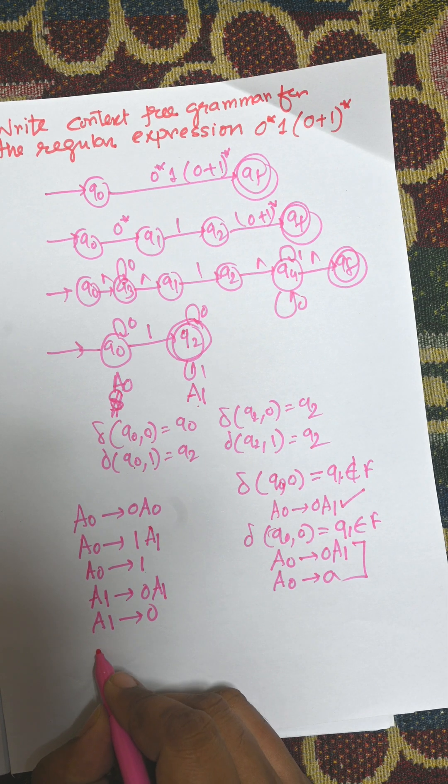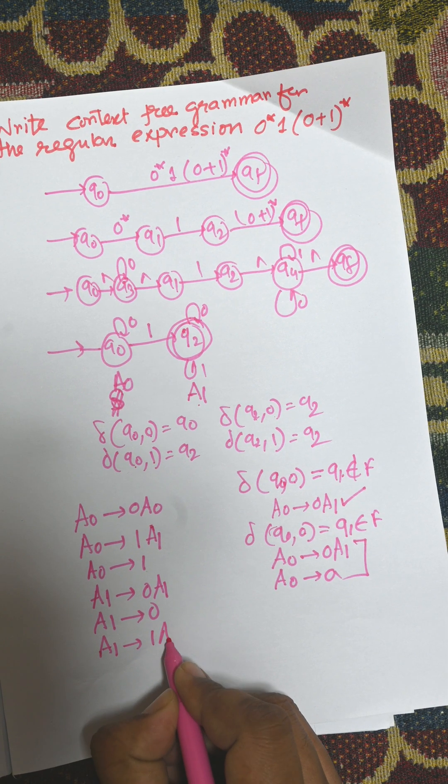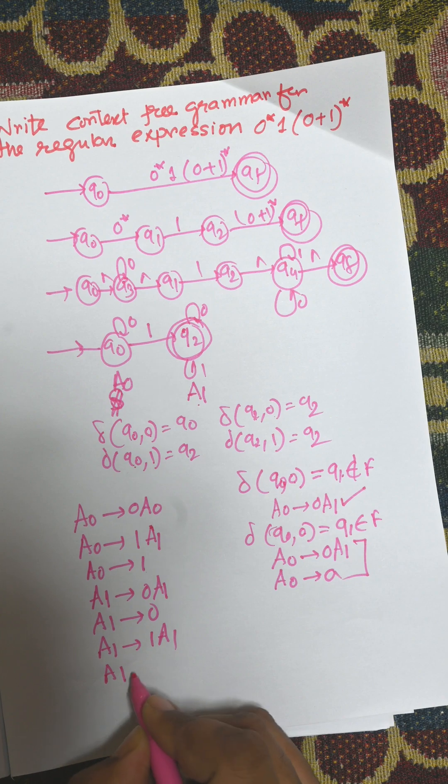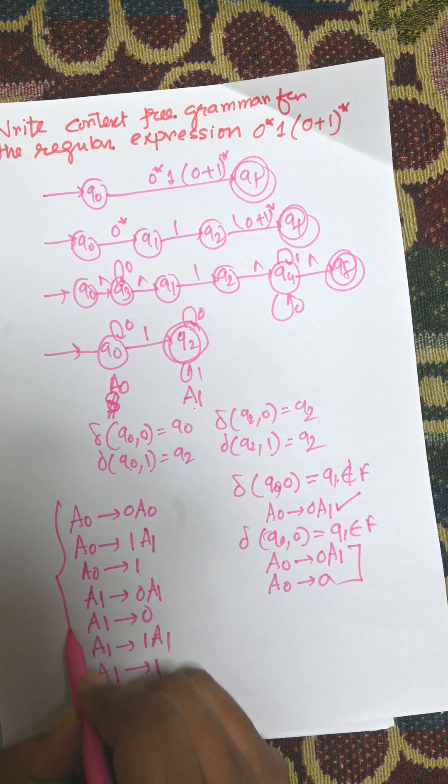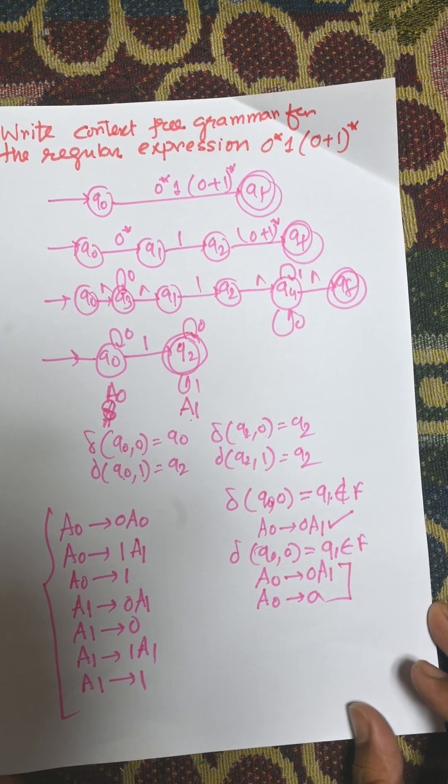So for this last transition, Q2 to 1 Q2, that means A1 to 1 A1, and another is A1 to 1. So these are the productions for the regular expression.